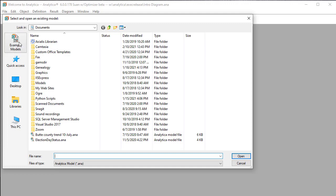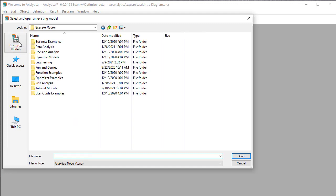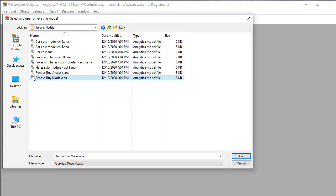Next, click on Example Models, which jumps to a folder containing several dozen example models organized into subfolders. The model we want is in the tutorial models, and in here we want the Rent vs. Buy model.